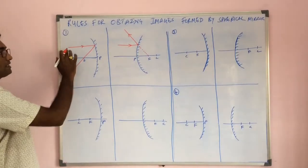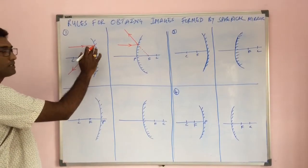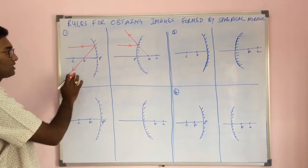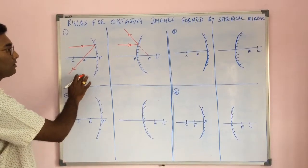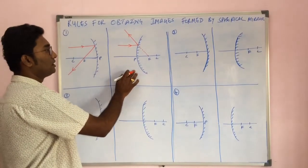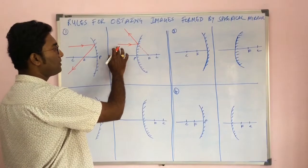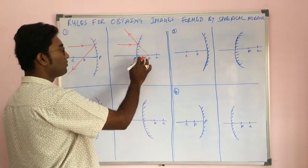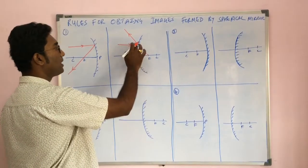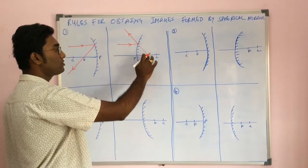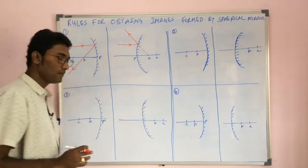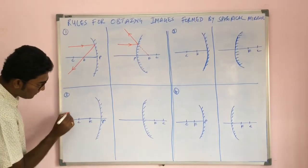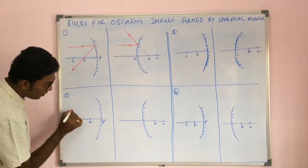To summarize the first rule: a light ray traveling parallel to the principal axis after reflection passes through the focus in the case of a concave mirror; and for a convex mirror, after reflection it diverges and appears to be coming out from the focus. The second rule involves a light ray traveling through the focus.